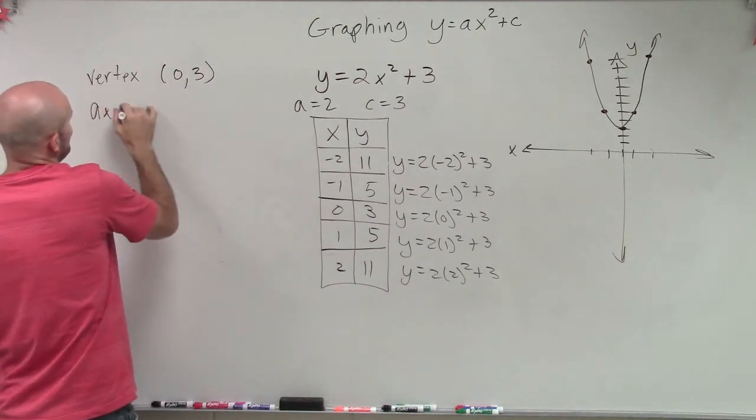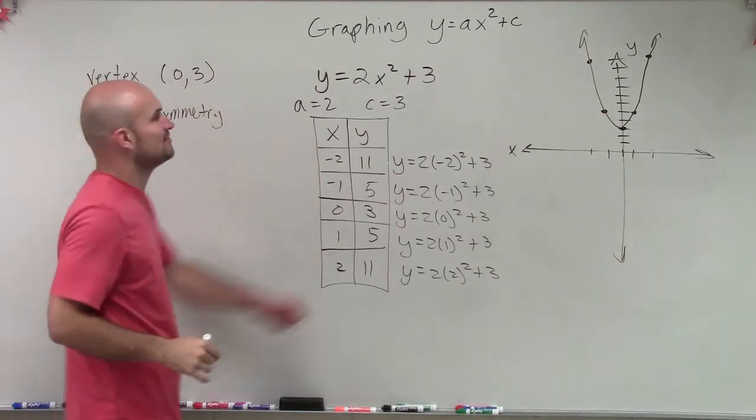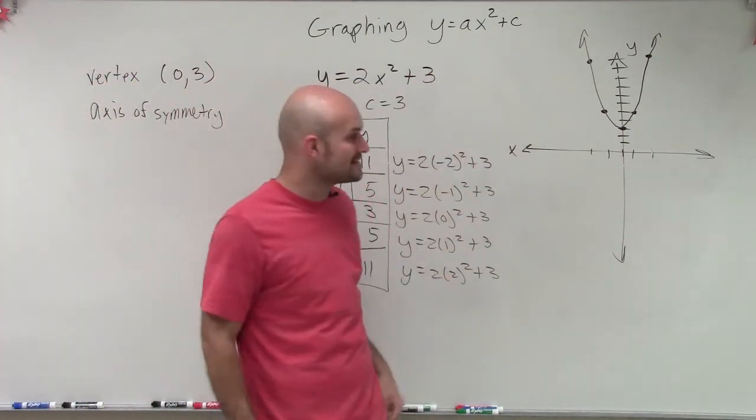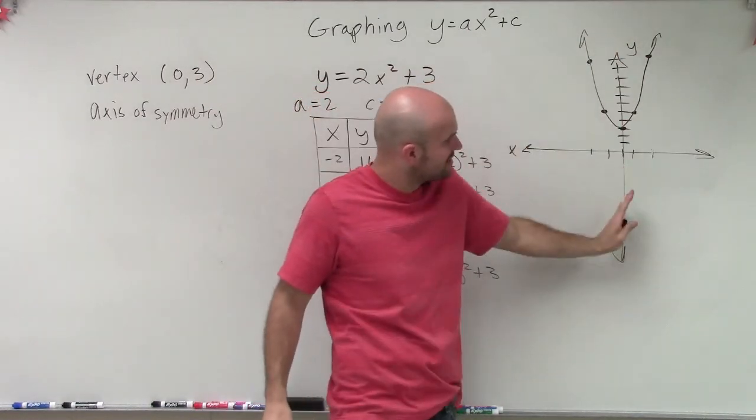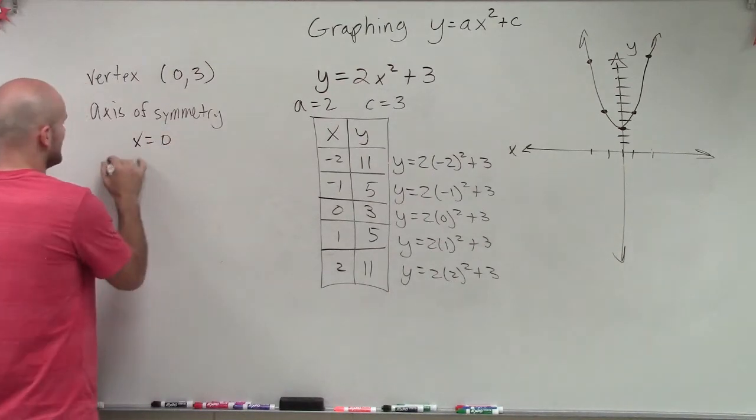When we look at the axis of symmetry, the graph has the same axis of symmetry as it did before with y equals ax squared. The only thing that happened is we moved it up, and we kind of stretch or compress it a little bit. But the axis of symmetry still is at the line x equals 0.